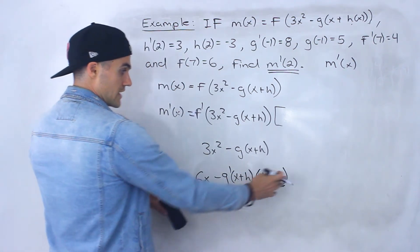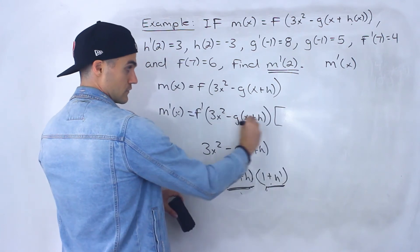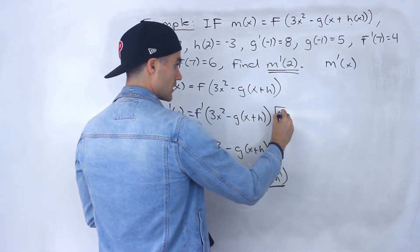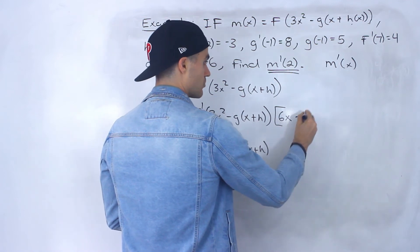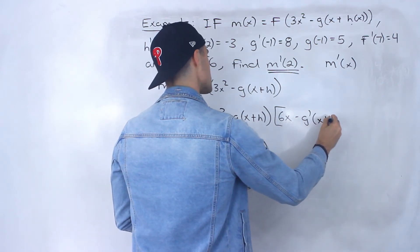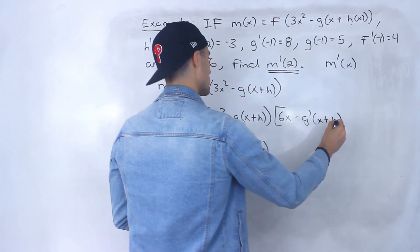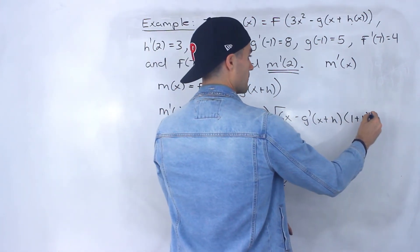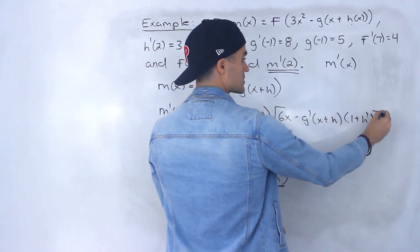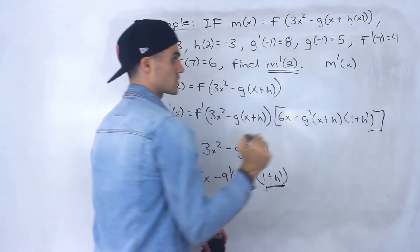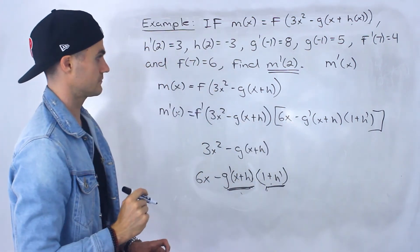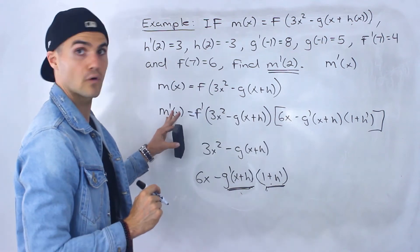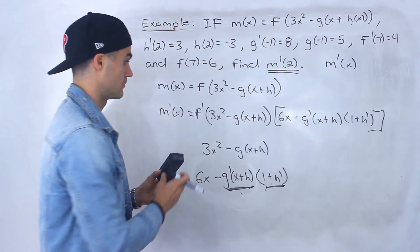So this is the derivative of the bracket. Putting it all together: m prime of x equals f prime of (3x squared minus g of (x plus h)) times [6x minus g prime of (x plus h) times (1 plus h prime)]. This here is the expression for m prime of x.